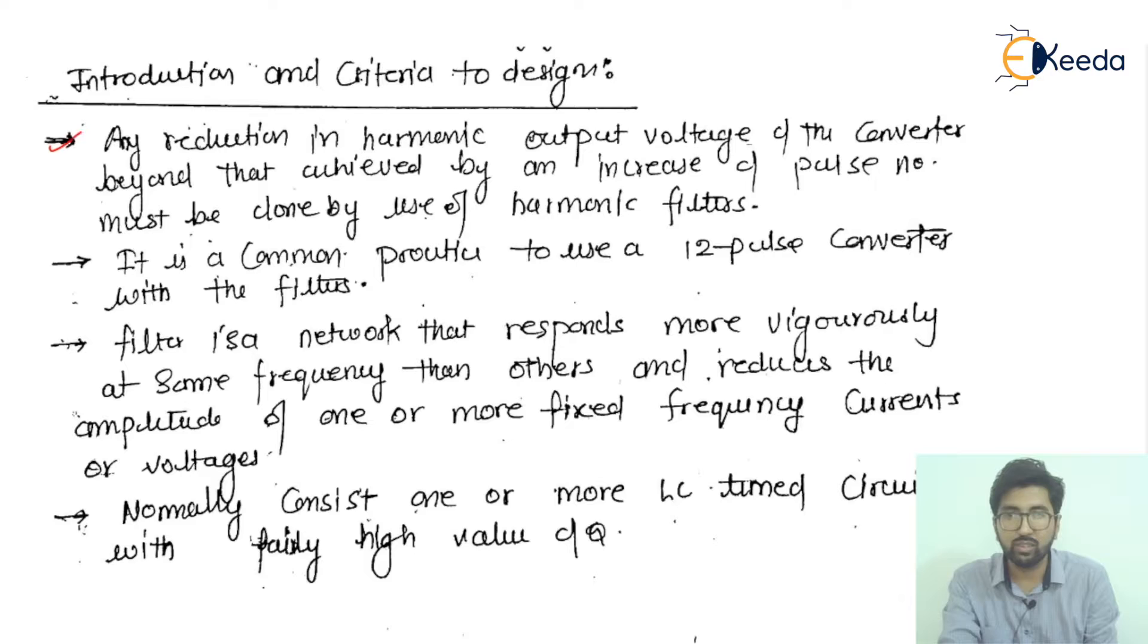It is common practice to use not a six-pulse converter but a 12-pulse converter for HVDC transmission systems.